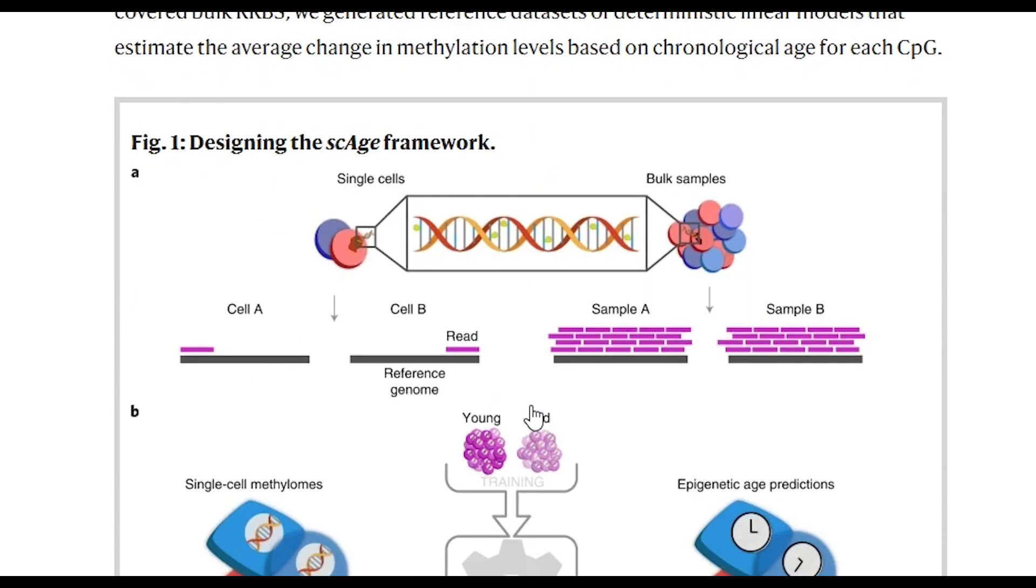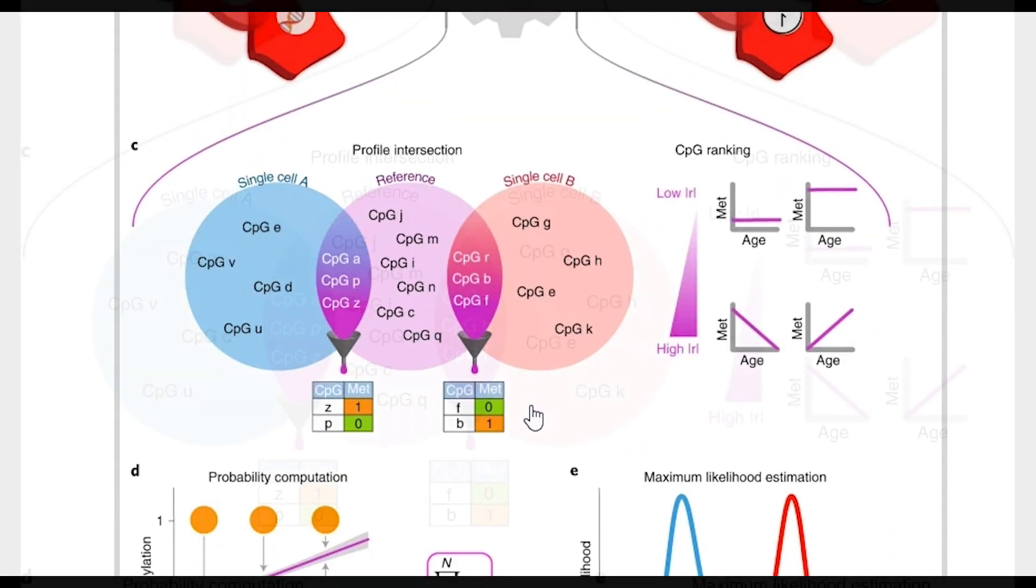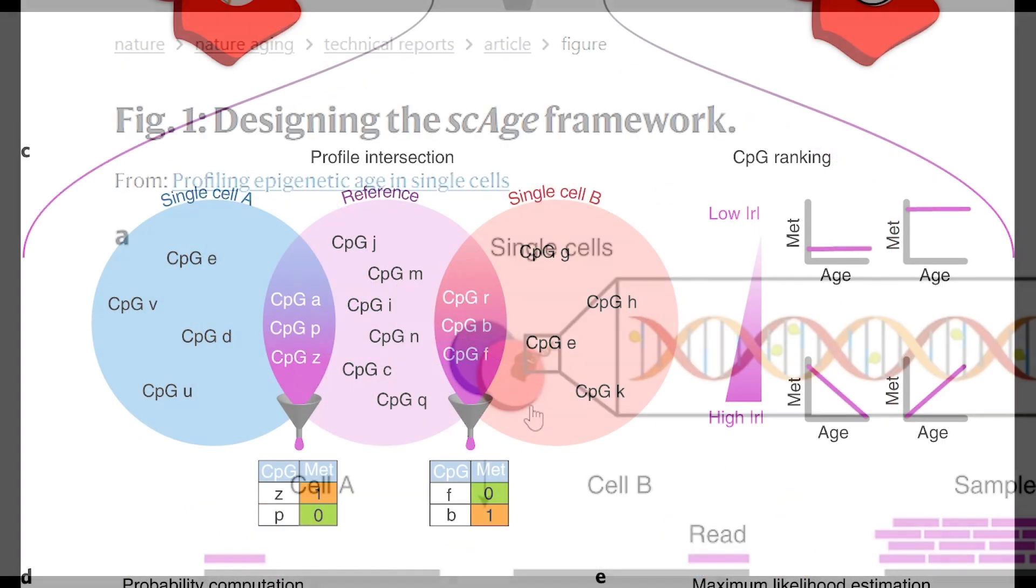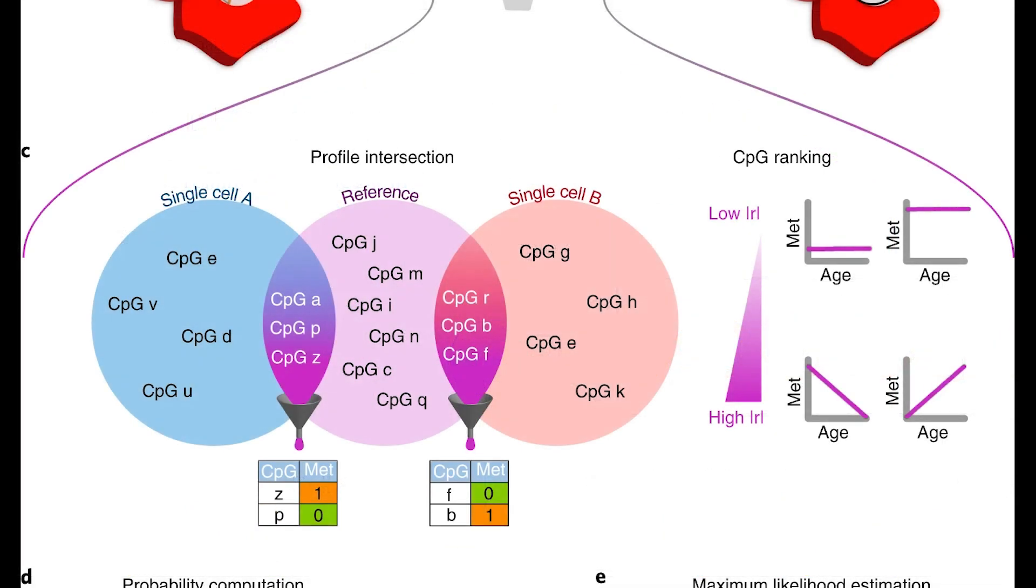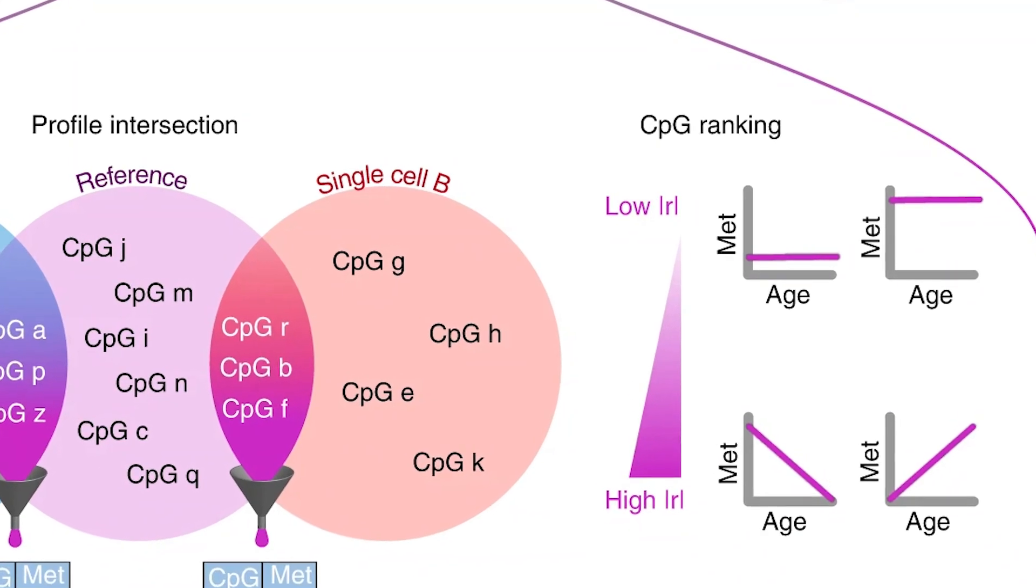And then another consideration is which CpG sites are more important for predicting the epigenetic age as important CpG sites you'd want to have that information for. So as not all CpG sites are going to be captured for a single cell they developed an algorithm to choose a distinct collection of age-associated CpGs that are most age-associated.